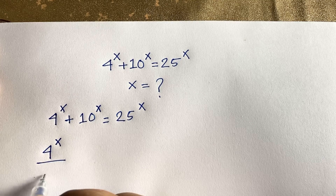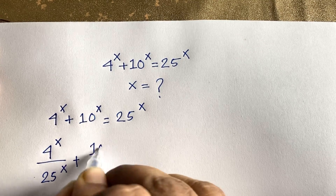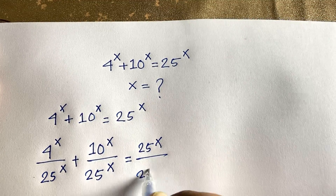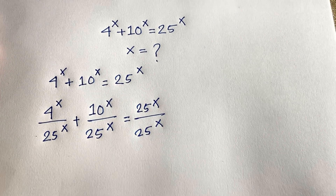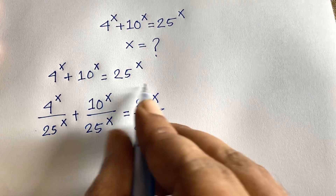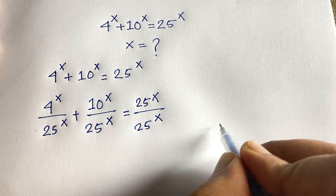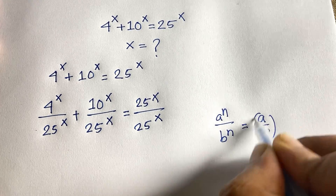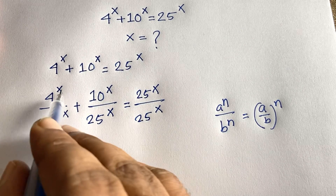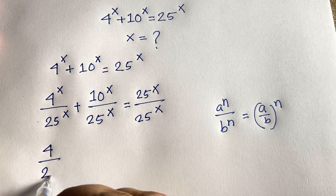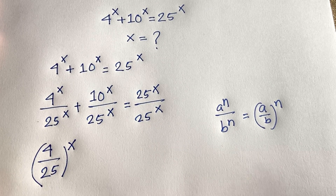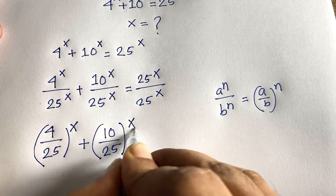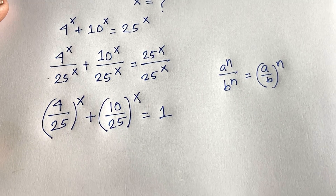...plus 10^x over 25^x, and the right side becomes 25^x over 25^x, which cancels to give 1. We know the exponential rule: a^n over b^n equals (a/b)^n. Applying this, we get (4/25)^x + (10/25)^x = 1.